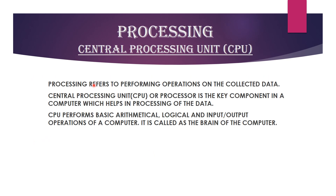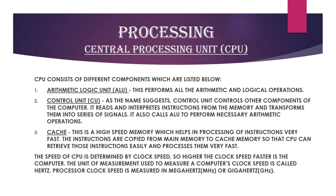Next we will learn about the processing event. Processing refers to performing operations on the collected data. The key component in a computer which helps in processing data is the CPU, or Central Processing Unit. The CPU performs basic arithmetical, logical, and input/output operations of a computer. In short, any task which we ask the computer to perform is done by the CPU, hence it is called the brain of the computer.